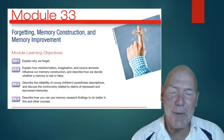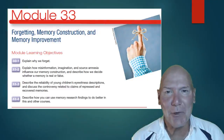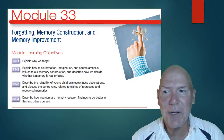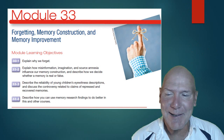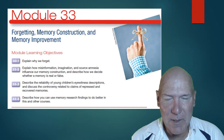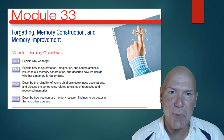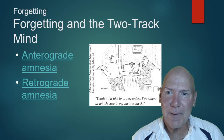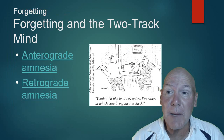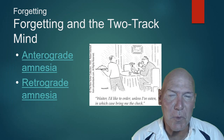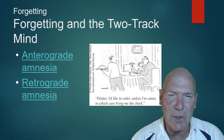This is our third video in the memory section and we're going to look at forgetting, memory construction, and memory improvement. Have a look at the outcomes again so you know what you're supposed to get out of it. When we talk about a two-track mind we're looking at types of amnesia — which is forgetting.